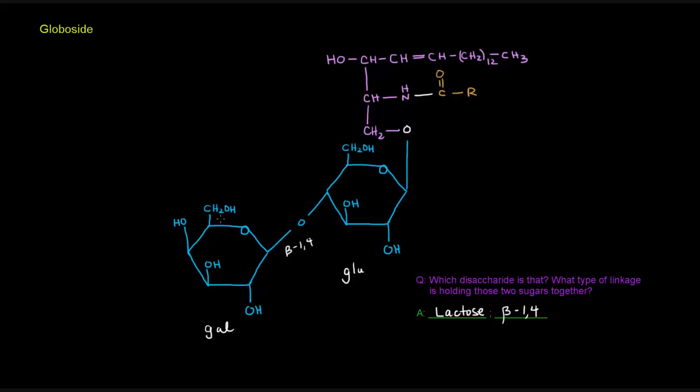And this here is a beta-1,4 linkage. Because this is carbon number 1, 2, 3, 4, 5, 6 on this one. And this here is 1, 2, 3, 4, 5, 6 on this one. And here, this is specifically the anomeric carbon. And because it's going up, this is beta.